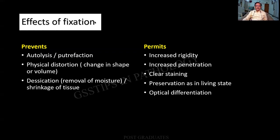What are the effects of fixation? What does it prevent and what does it permit? Prevention: it prevents autolysis, heterolysis, and putrefaction. Autolysis is destruction by the tissue's own lysosomal enzymes, whereas heterolysis is by infecting inflammatory cells or bacteria. Putrefaction is superadded. Physical distortion — a change in shape and volume — is also prevented by an ideal fixative. Desiccation: it prevents removal of moisture and shrinkage of the tissue. These are some advantages; we shall go to the full list later.